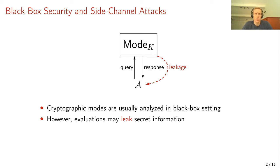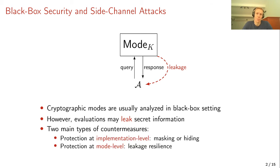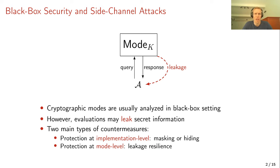There are two ways to mitigate this problem. One way is protection at the implementation level: you take a very efficient, black box secure scheme and once implemented you protect it using masking or hiding, making sure the attacker cannot get any useful leakage. Typically these masking approaches are design-specific and can be expensive.